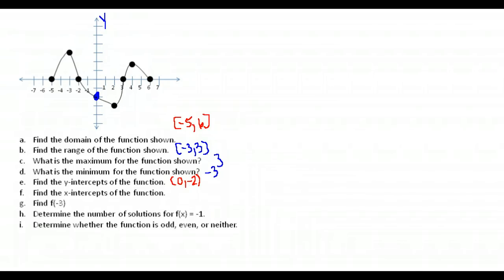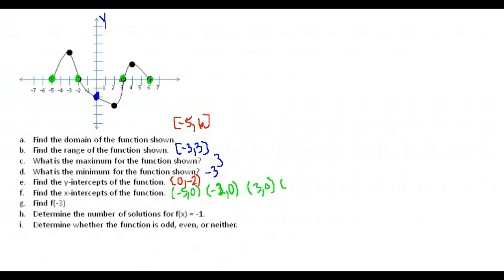Find the x-intercepts. X-intercepts are where the graph crosses the x-axis. It crosses at negative five, zero; at negative two, zero; at three, zero; and at six, zero. It has four x-intercepts. So we write each of those down: the points (-5, 0), (-2, 0), (3, 0), and (6, 0).